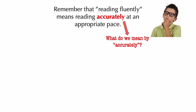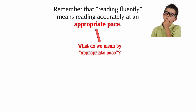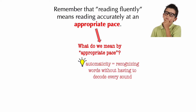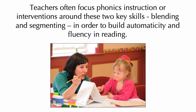What do we mean by reading accurately? We mean decoding. And as we just learned, decoding is essentially being able to blend and segment phonemes — sounding out words. Reading at an appropriate pace means automaticity: being able to recognize words without having to decode every single sound. That is why teachers often focus their phonics instruction or interventions for struggling readers around blending and segmenting. These essential phonics skills are directly connected to building students' automaticity and reading fluency.